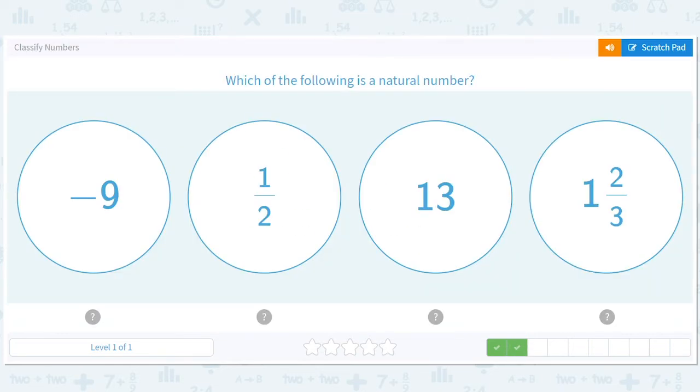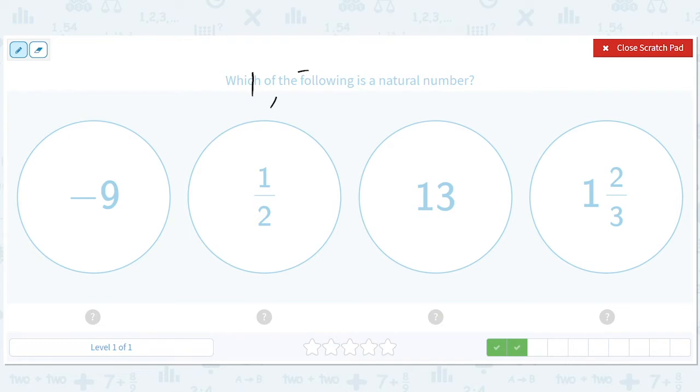Natural numbers are 1, 2, 3, 4, 5. They're the whole numbers without 0. Natural numbers and whole numbers are almost the same, except whole numbers have 0.